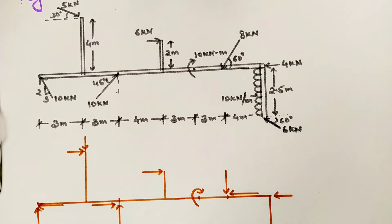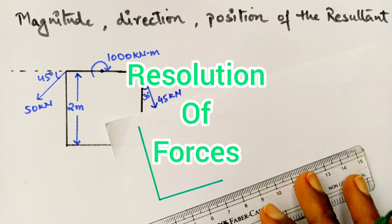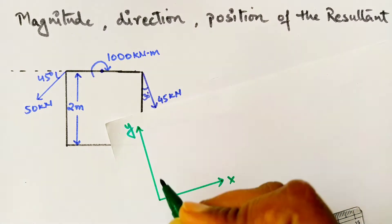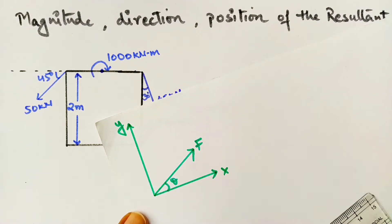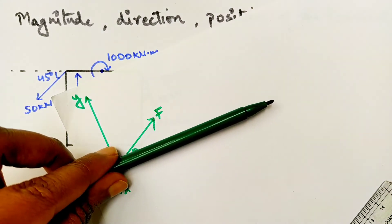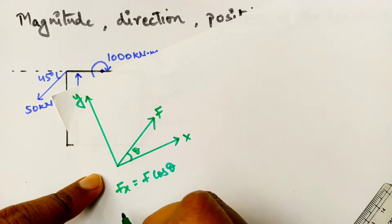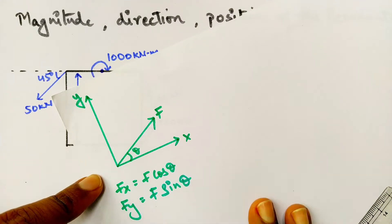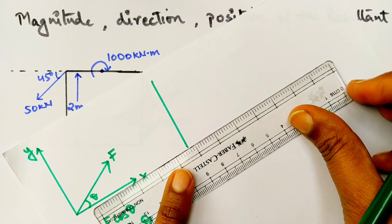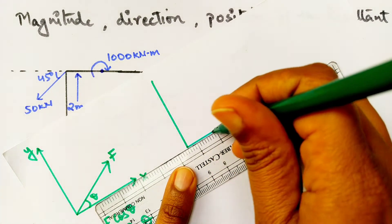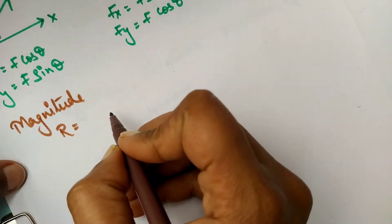Let's see the formula for resolving forces. Taking a small example: a force is placed at theta degrees from the x-axis. From wherever the x-axis reference is, theta is given — you take that component as cosine. Since it is inclined from x, the x-component will be cos θ and the other will be sin θ. This is the most common mistake students make — they get confused between sine and cosine and put things in the opposite manner, losing marks.